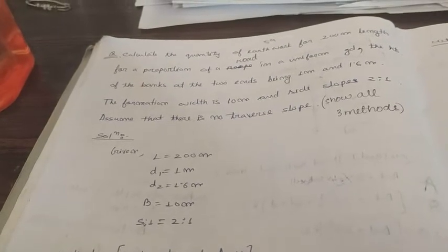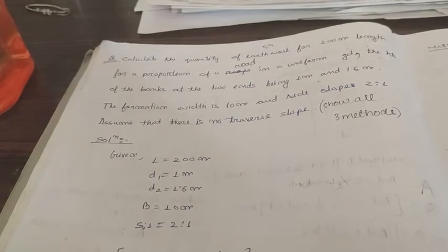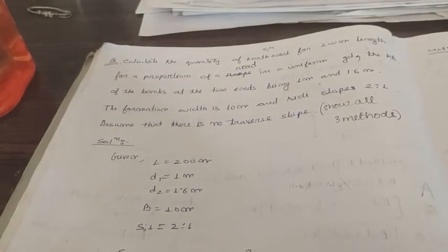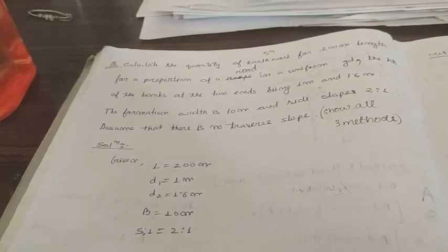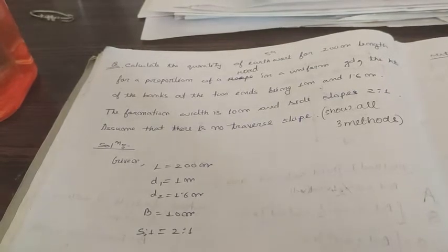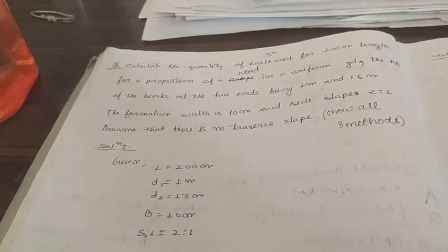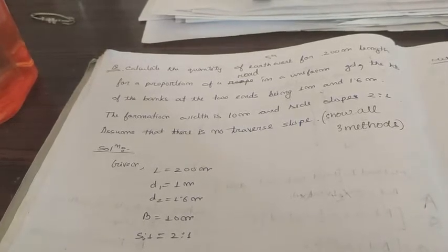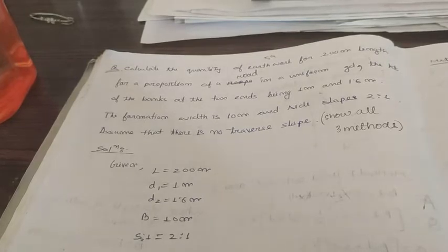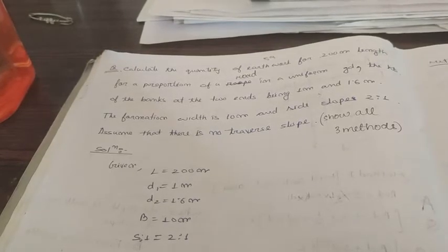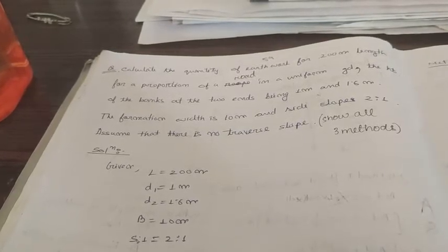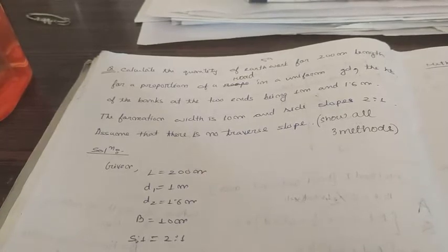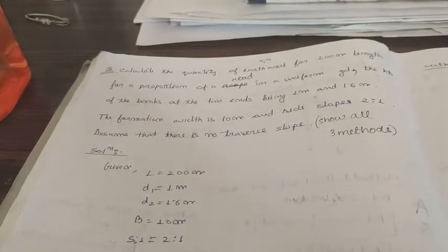Good morning students, I'm here with my fourth lecture video. We had already finished knowing the different methods of calculation of earthwork. Today I'm presenting a question and we'll try to find out the quantity of earthwork by using three formulas: mid-sectional method, mean sectional method, and prismoidal method.